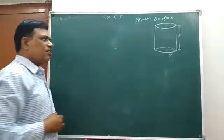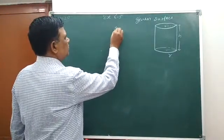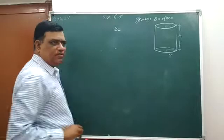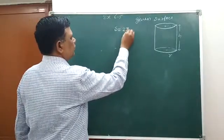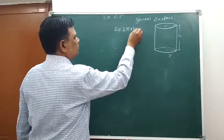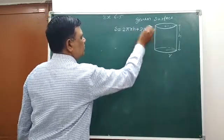Here the surface is constant. Surface area of cylinder is 2πrh plus 2πr².